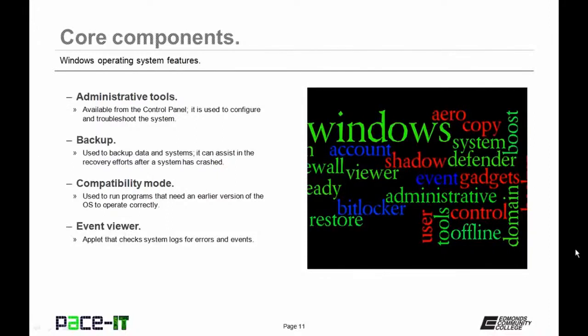All Windows operating systems have a backup program built right into the operating system. Then there's compatibility mode — especially in Vista, Windows 7, and Windows 8, they sometimes have difficulty running programs developed for Windows XP, but you can run those in compatibility mode.